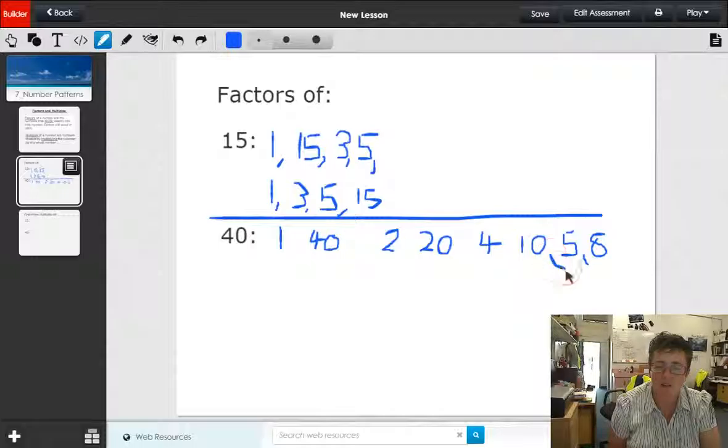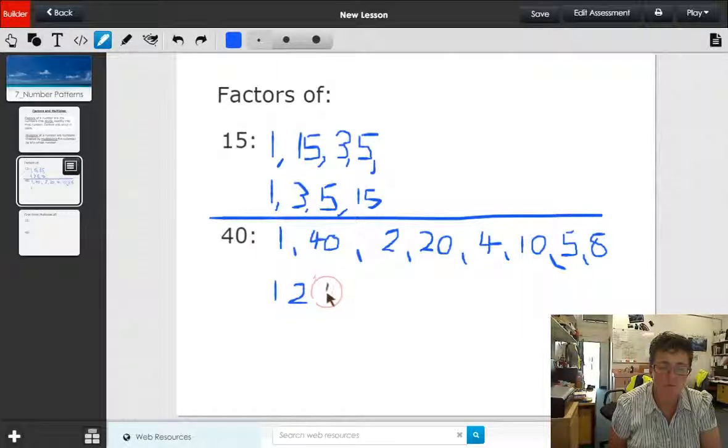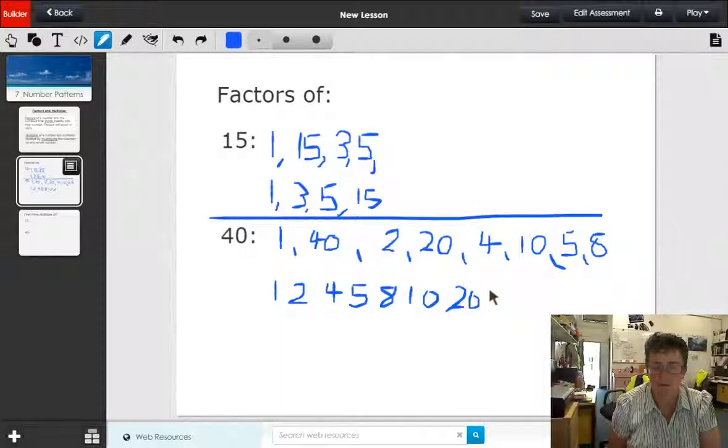Six doesn't go into 40, seven doesn't go into 40, and eight goes into 40 five times. So we know we've come back to the beginning, so there are no more factors. Then we put them in ascending order, so from smallest to largest: one, two, four, five, eight, ten, twenty, and forty.